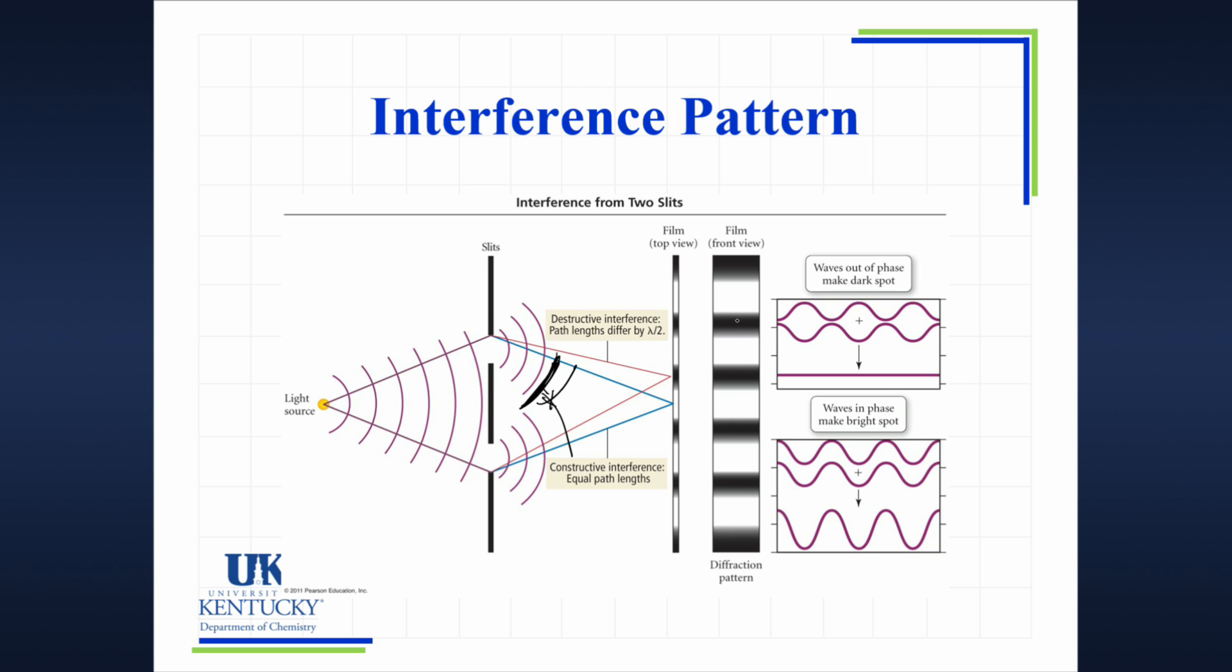So anytime, this is a property of light, anytime light passes through two slits and it's the same source of light and they hit two slits, you're always going to see a very distinctive diffraction pattern. You are going to see destructive interference, and that's here. You're going to see constructive interference, and you're going to see a dark light, dark light, dark light pattern. So that is a property of light when it's passed through two slits.